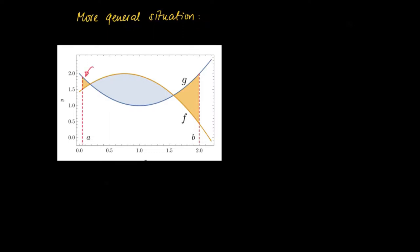Here we get a more general picture where we have two functions, g and f, and we see sometimes g is larger than f, and other moments f is larger than g.